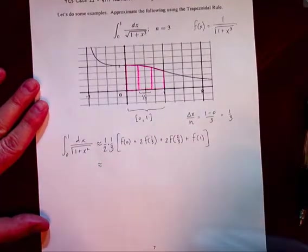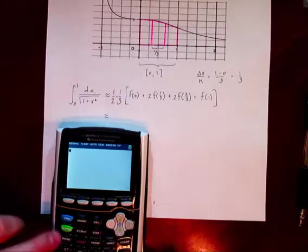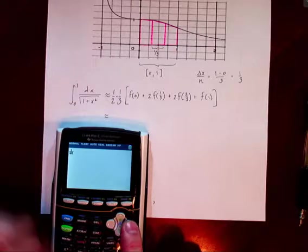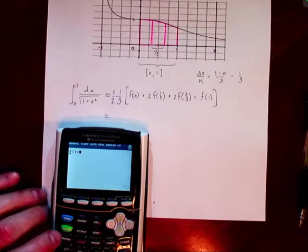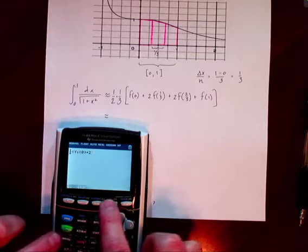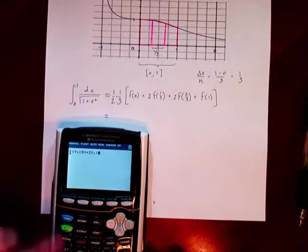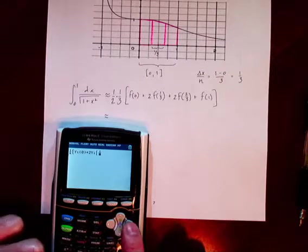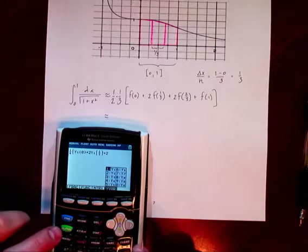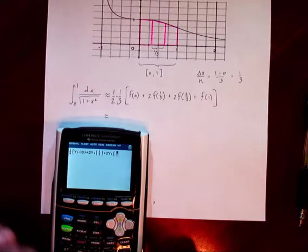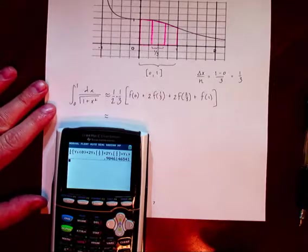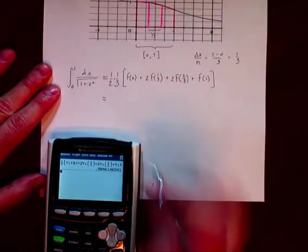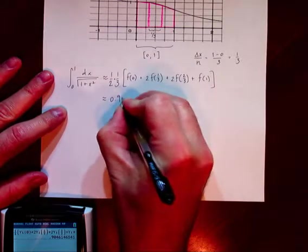Let's use our calculator — that's the easiest way to do it. So we'll do 1 over 6, open parentheses, and we'll have y1 at zero, plus 2 times y1 at one-third, plus 2 times y1 at two-thirds, plus y1 at 1. And what we get is 0.905.